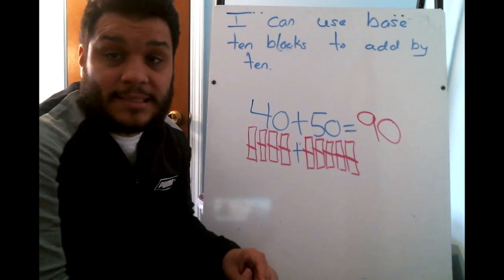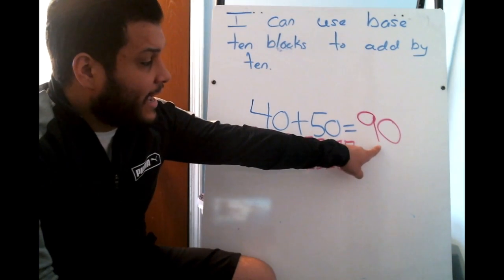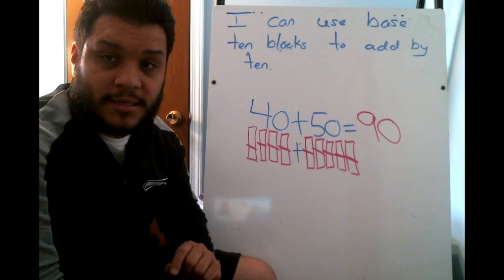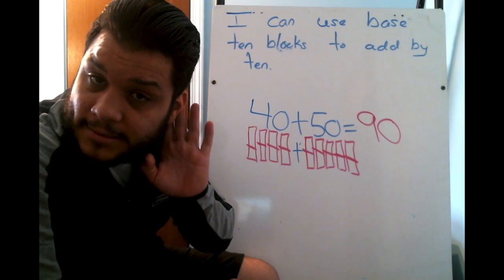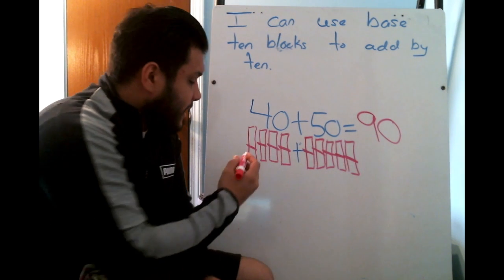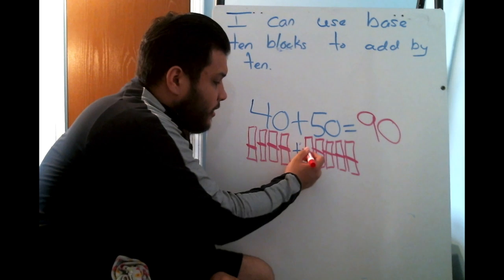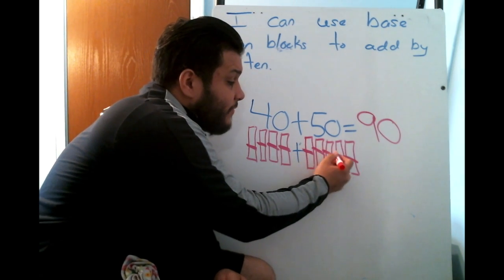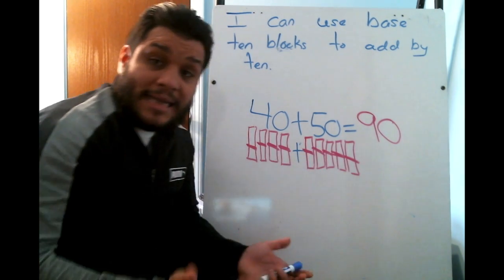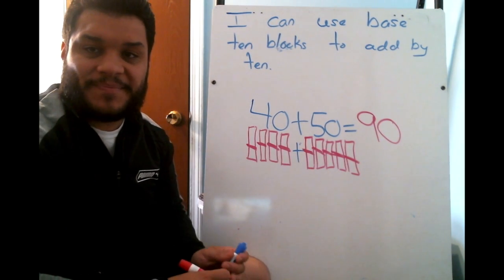How will I check my work to make sure that this is correct? Well, I see that I have how many 10s in the number 90? How many 10s? Yes, nine 10s in the number 90. Let me see how many 10s I drew here. One, two, three, four, five, six, seven, eight. Nine 10s gives me the number 90. Awesome.